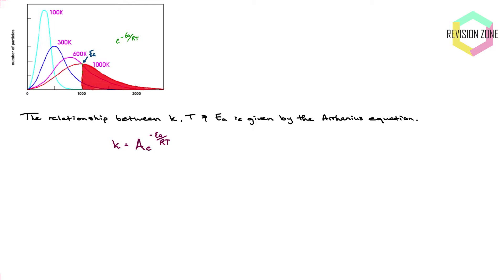If you have more particles with energy equal to or above the activation energy, you get a higher rate of reaction. Since rate is proportional to the rate constant, the proportion of particles above the activation energy affects K. Increasing temperature increases that proportion and therefore affects the rate constant. Adding a catalyst lowers the activation energy threshold, which also affects K.